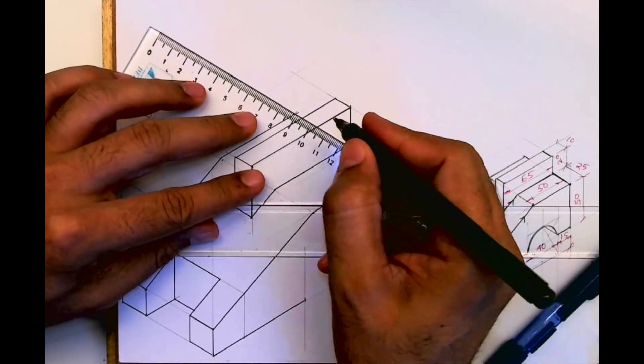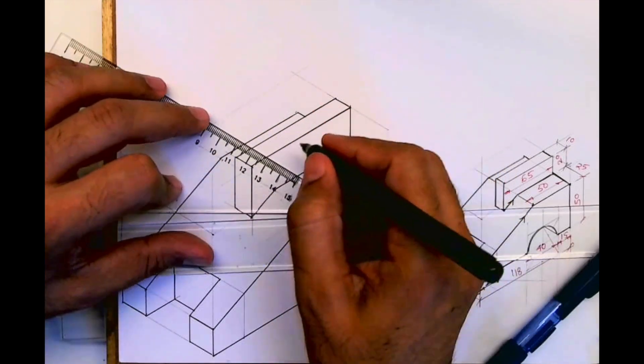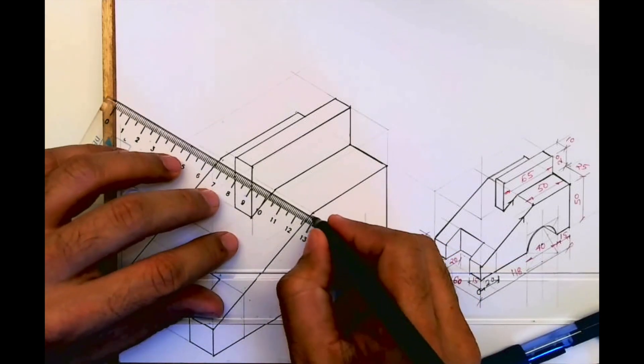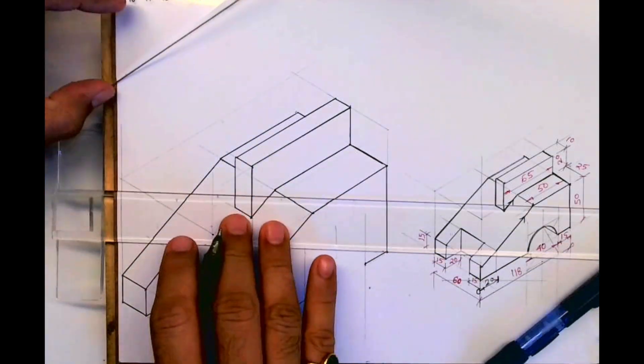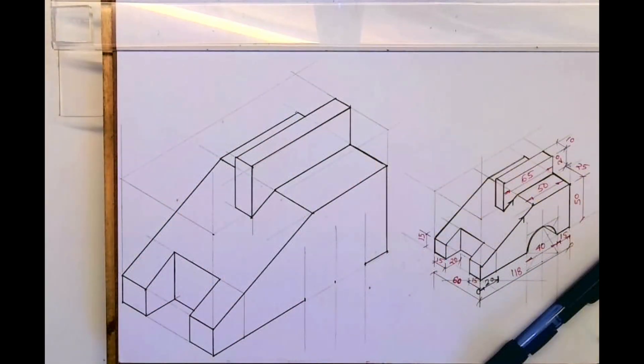And now we are left with the circular part. Now we are left with only the circular part, so that we can use the 4-center method to draw that circle. Now remember, in that we know the center point, so from the center point we need to take 20, 20.